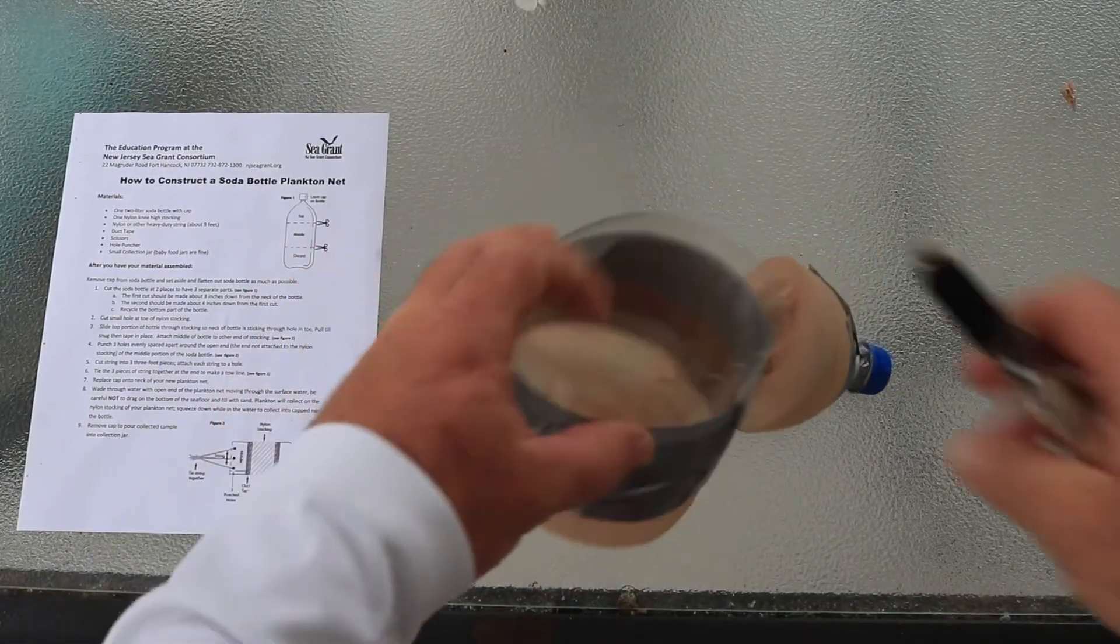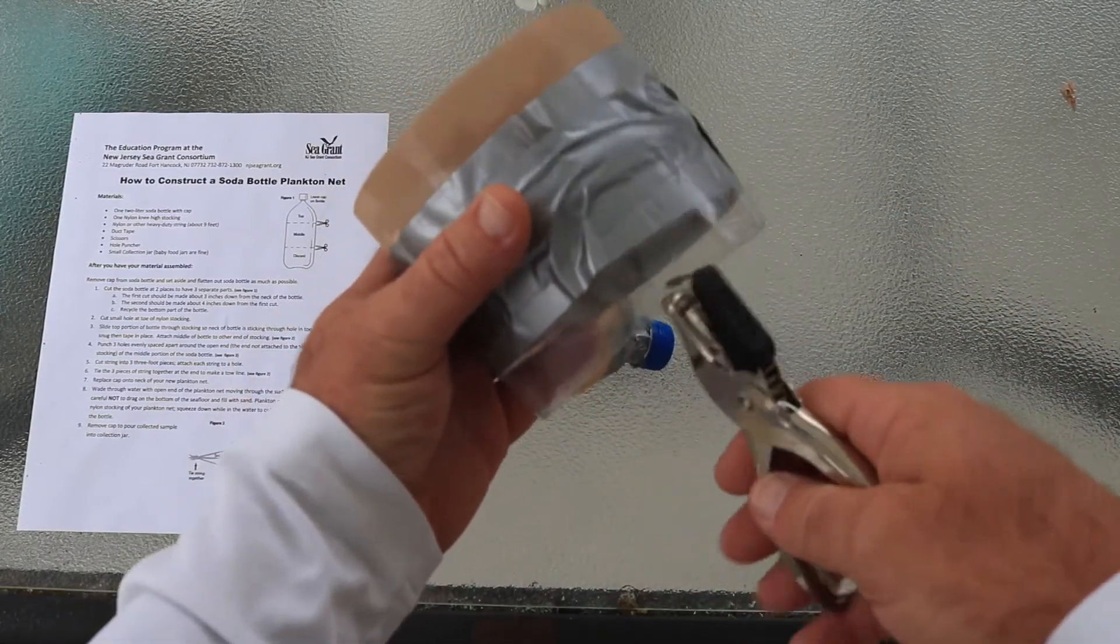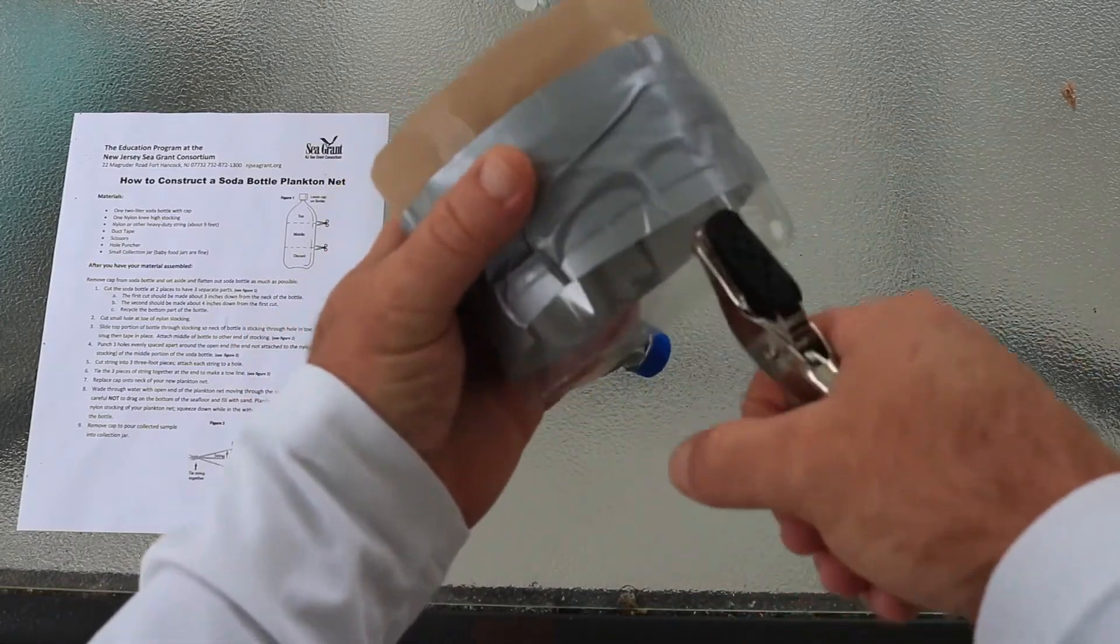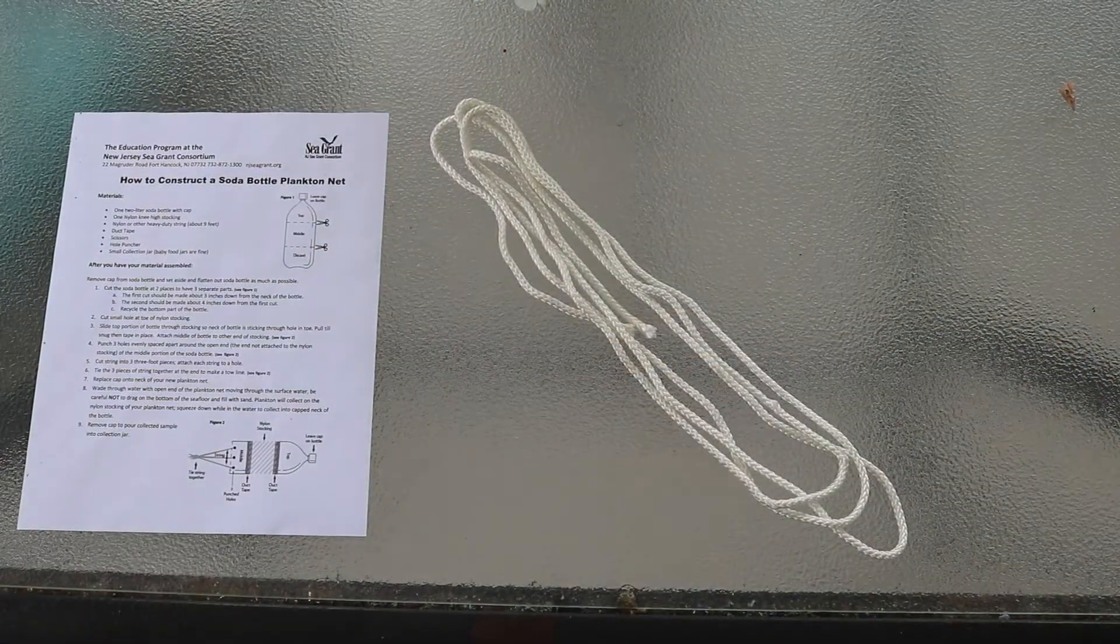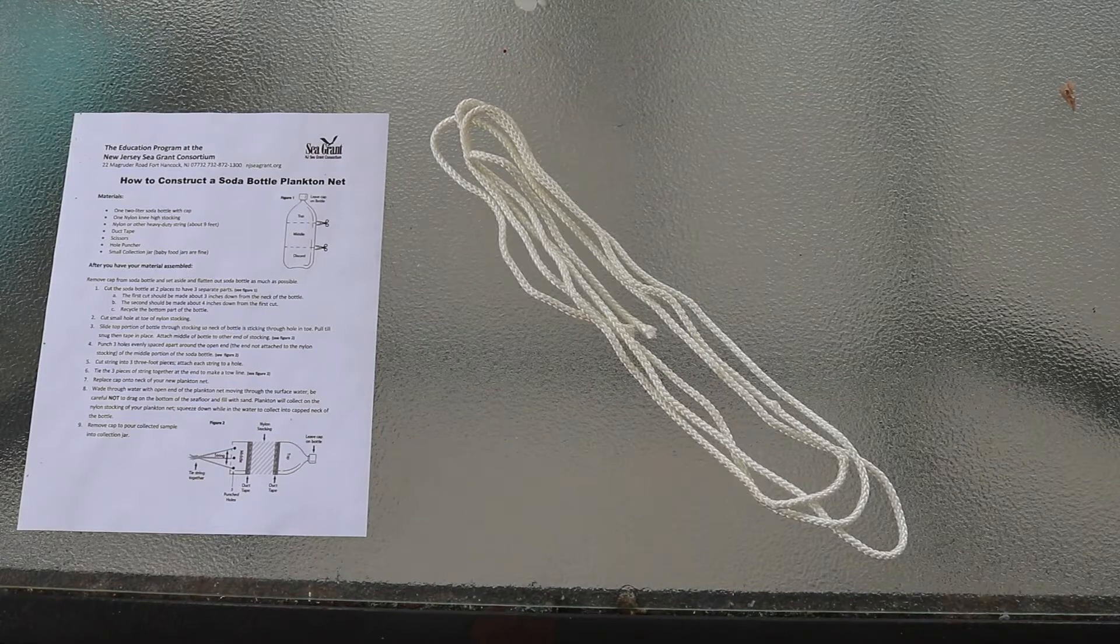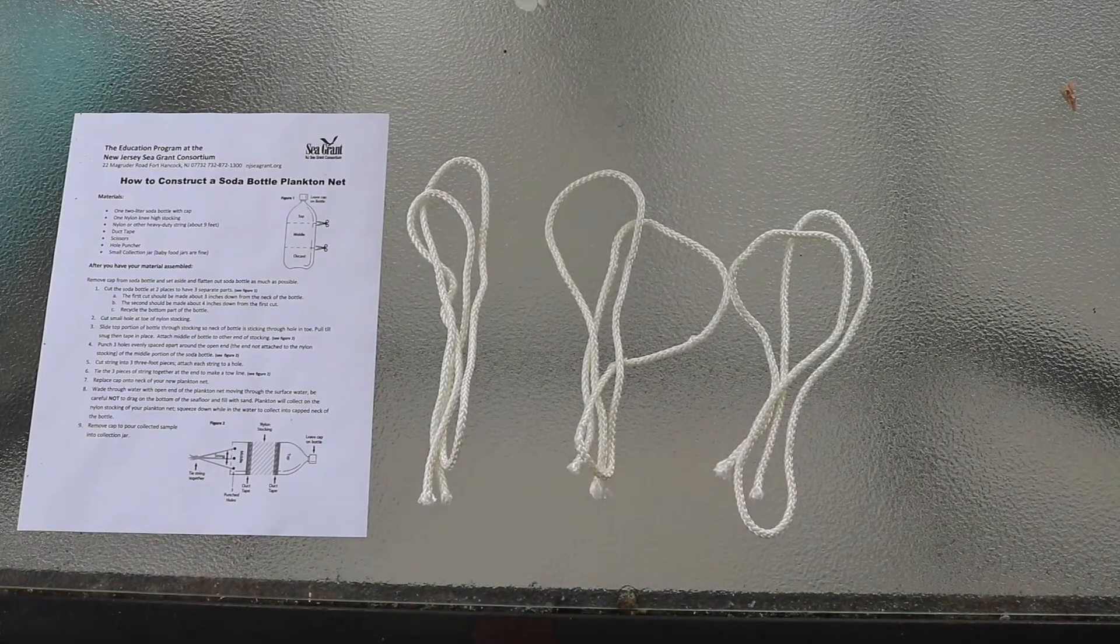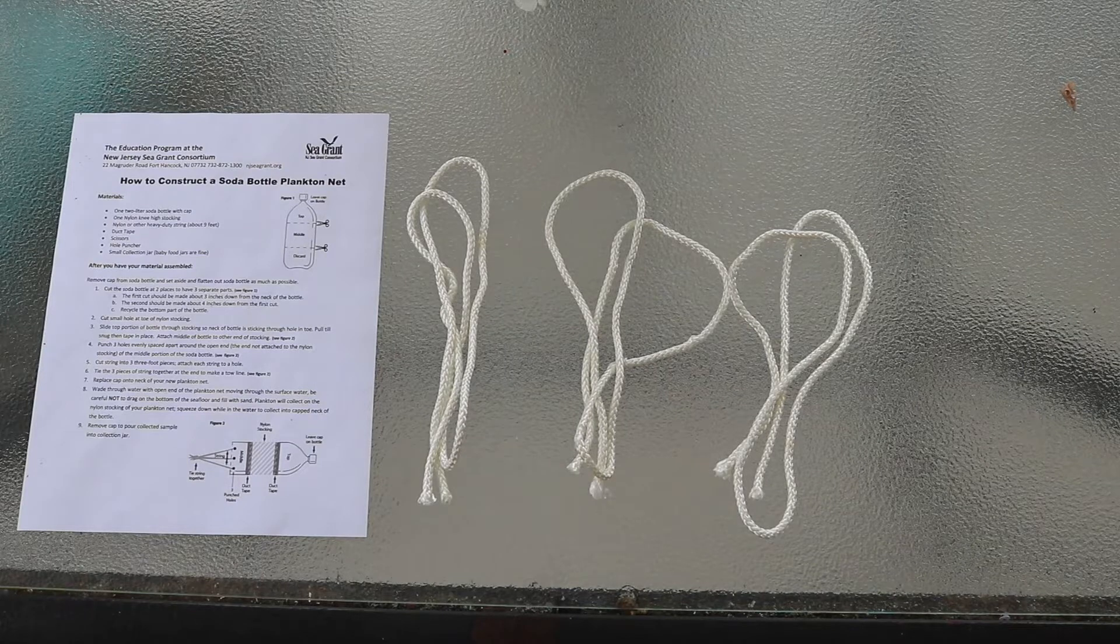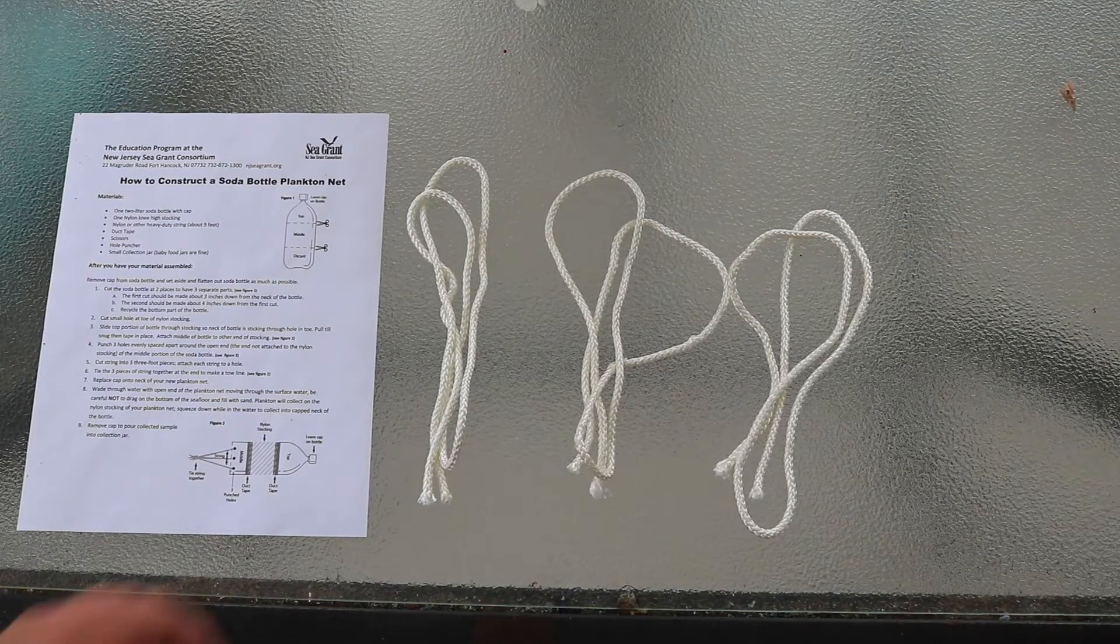The next step, we're going to hole punch three holes on the top section. Now we're going to take the rope and cut it into three 3-foot sections. Now we're going to take those three sections and tie them into the holes that we just made.